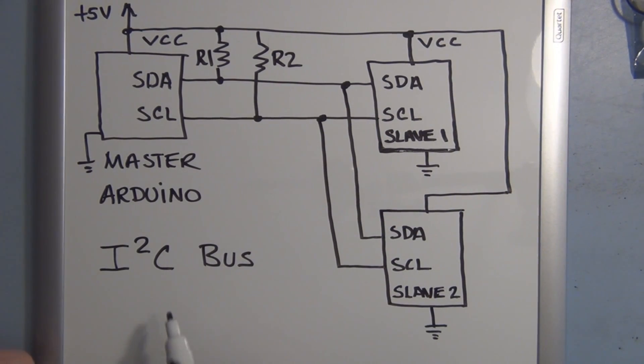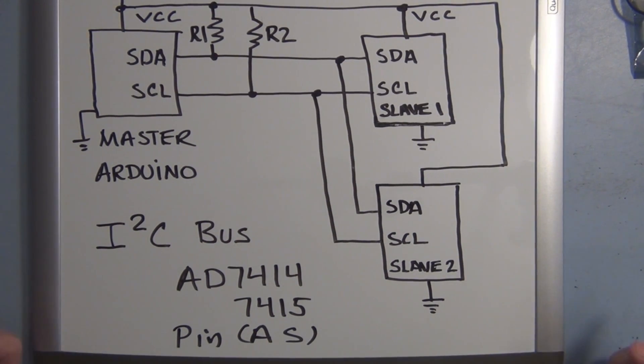Analog devices actually makes an AD 7414 and 7415. And they have an address select pin. Address select. And what you do with that is depending on whether that pin is tied to ground, plus five volts or floating, you can select three different addresses.